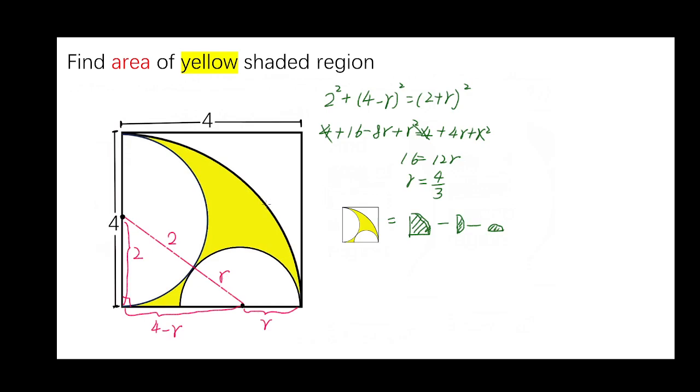It's easy to know. The area of the yellow shaded region equals to the area of the quarter circle minus the area of the big semicircle minus the area of the small semicircle.